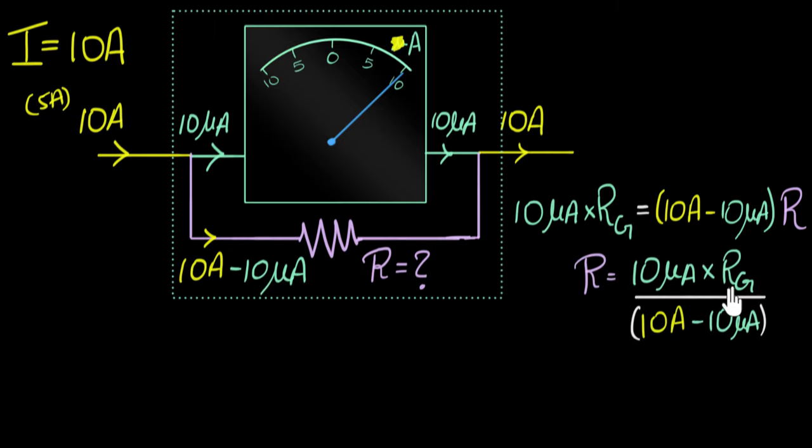Now all you will have to do is plug in the value of the resistance of the galvanometer, which can be calculated. We know how to calculate resistance of devices practically. If you're solving a problem in your exams, then the resistance of the galvanometer would be given to you. And once you've plugged in, you would have found out the required resistance to connect in parallel to convert this into an ammeter.